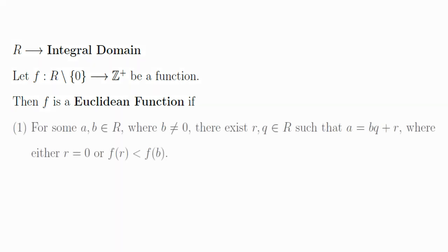First, for some elements A and B in R where B is non-zero, there exist elements R and Q such that A is equal to B times Q plus R, where either R equals 0 or the value of the function at the point R is less than the value of the function at the point B.